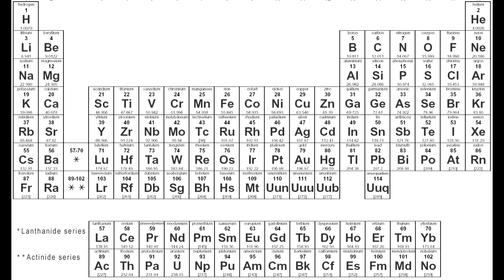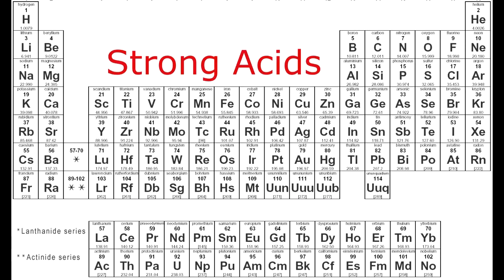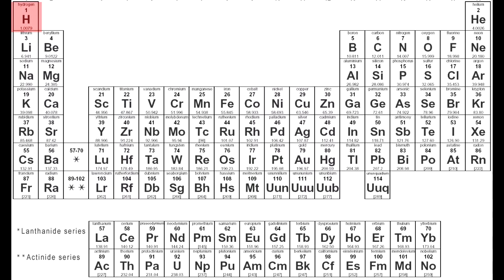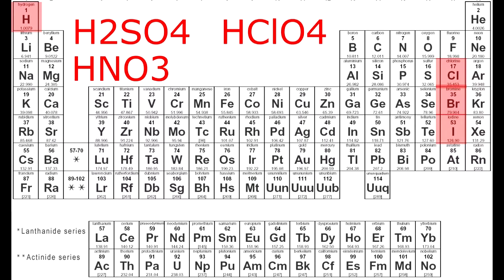Here is a look at strong acids, strong bases, and soluble salts while looking at the periodic table. Strong acids are the ones that start with H⁺: HCl, HBr, HI, H2SO4, HNO3, HClO4, and HClO3. Any other acid is assumed to be weak.